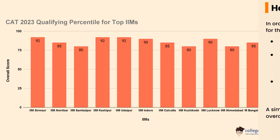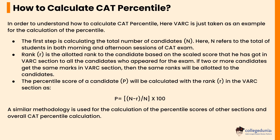Let's check how to calculate CAT percentile. In order to understand this, VARC is taken as an example for the calculation. The first step is calculating the total number of candidates, which refers to the total of students in both morning and afternoon sessions of the CAT exam. Rank is the allotted rank to candidates based on the scaled score in the VARC section. If two or more candidates get the same marks in the VARC section, then the same rank will be allotted to those candidates.